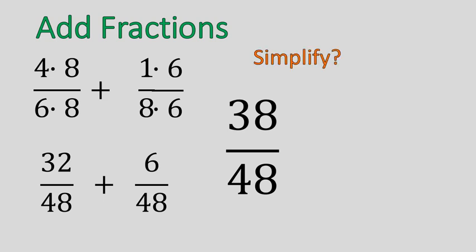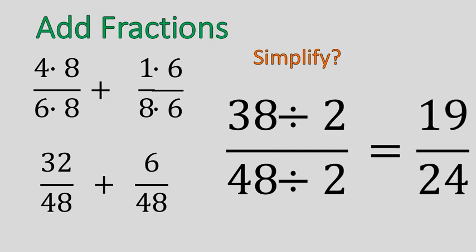That's when we ask ourselves, can we simplify this? In this example, you can simplify. Thirty-eight and forty-eight have a common factor of two, so you can simplify by dividing both of them by two for our final simplified answer of nineteen over twenty-four. Done.